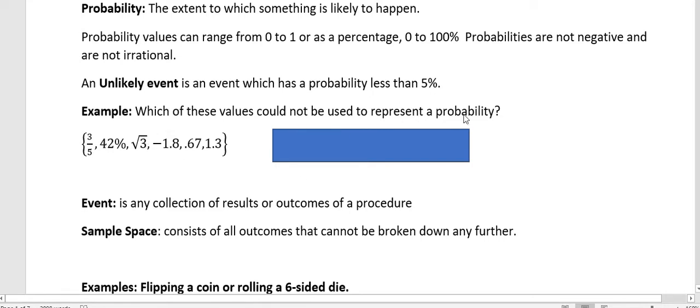Which of these values could not be used to represent a probability? Three-fifths, 42%, square root of three, negative 1.8, 0.67, and 1.3.